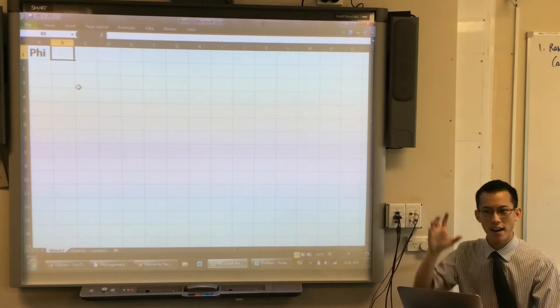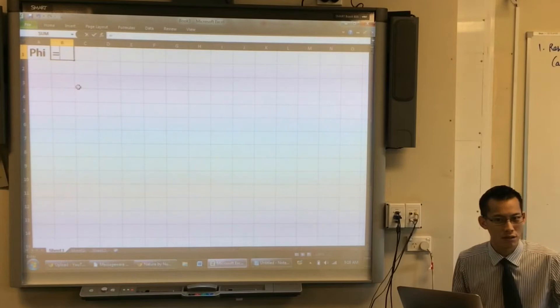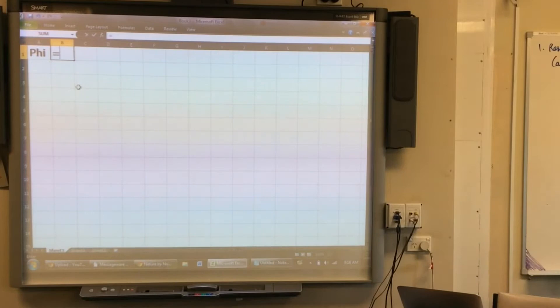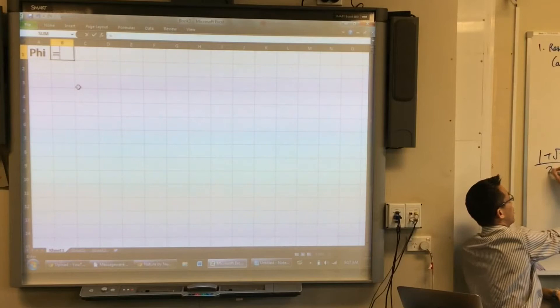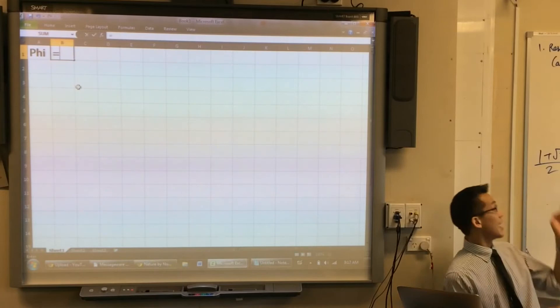The way to start a calculation in Excel is just to hit equals. That tells Excel, hey, can you work out what I'm about to give you. If you remember, we said that the numerical value of phi was equal to 1 plus root 5 over 2.